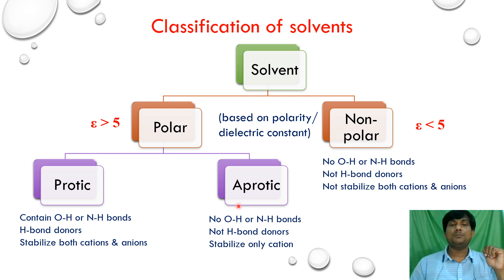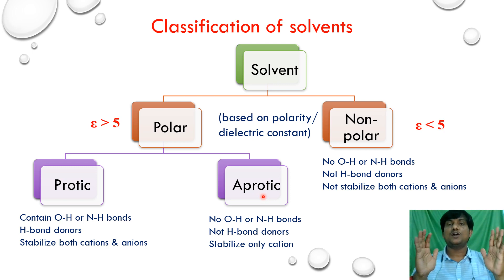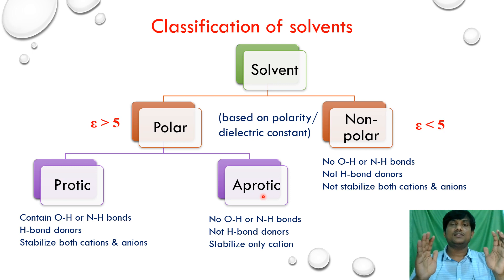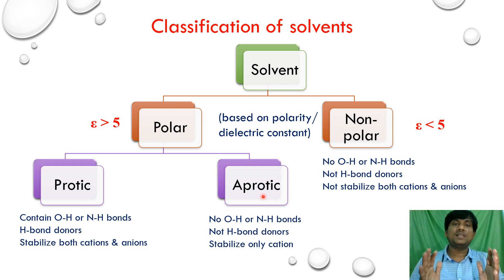In the case of aprotic solvents, they cannot form hydrogen bonding and do not have NH or OH bonds. So they cannot solvate nucleophiles or negatively charged anions — they can only solvate cations, stabilizing cations but not anions or nucleophiles.